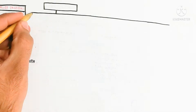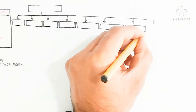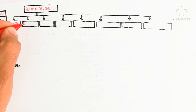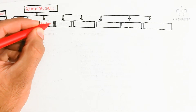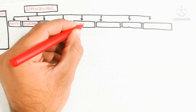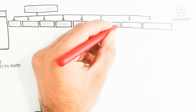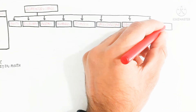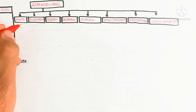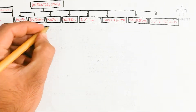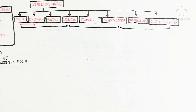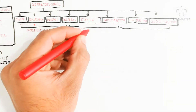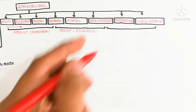The alimentary canal extends from the mouth to the cloaca aperture: mouth, buccal cavity, pharynx, esophagus, stomach, small intestine, large intestine, and cloaca aperture. The digestive system can be divided into three regions: the foregut (stomodeum), the midgut (mesenteron), and the hindgut (proctodeum).